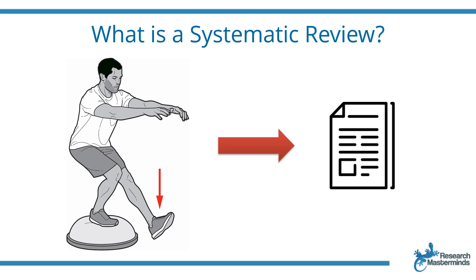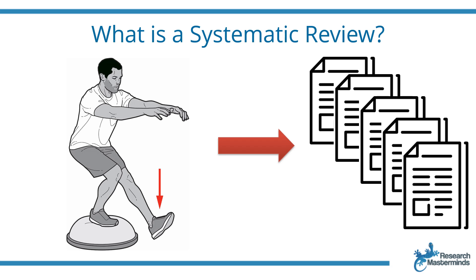We'll start with what is a systematic review. A researcher may study the effectiveness of balance exercises after an ankle sprain on the time it takes to go back to football practice. The research team will analyze the results by comparing the time taken to return to practice between the group who did the balance exercises and the group who did no home exercises at all, and then publish their findings in an academic journal. This study is referred to as a primary or empirical study.